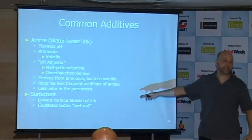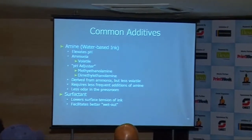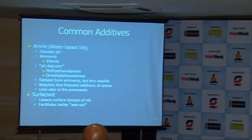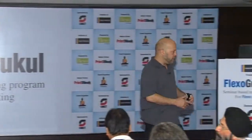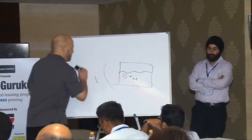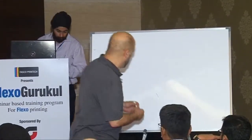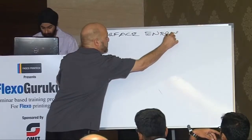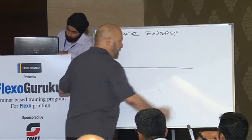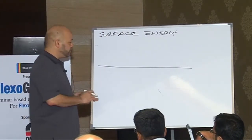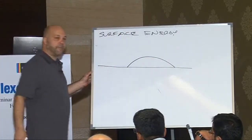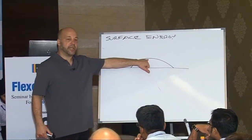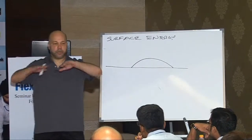Another common additive is a surfactant, and what it does is lower the surface tension of the ink so that it wets out. Now, a quick thing about surface tension: when we think of surface energy, fluids have surface tension and solids have surface energy — in both cases they're measured in dynes, which is a unit of measure of energy.